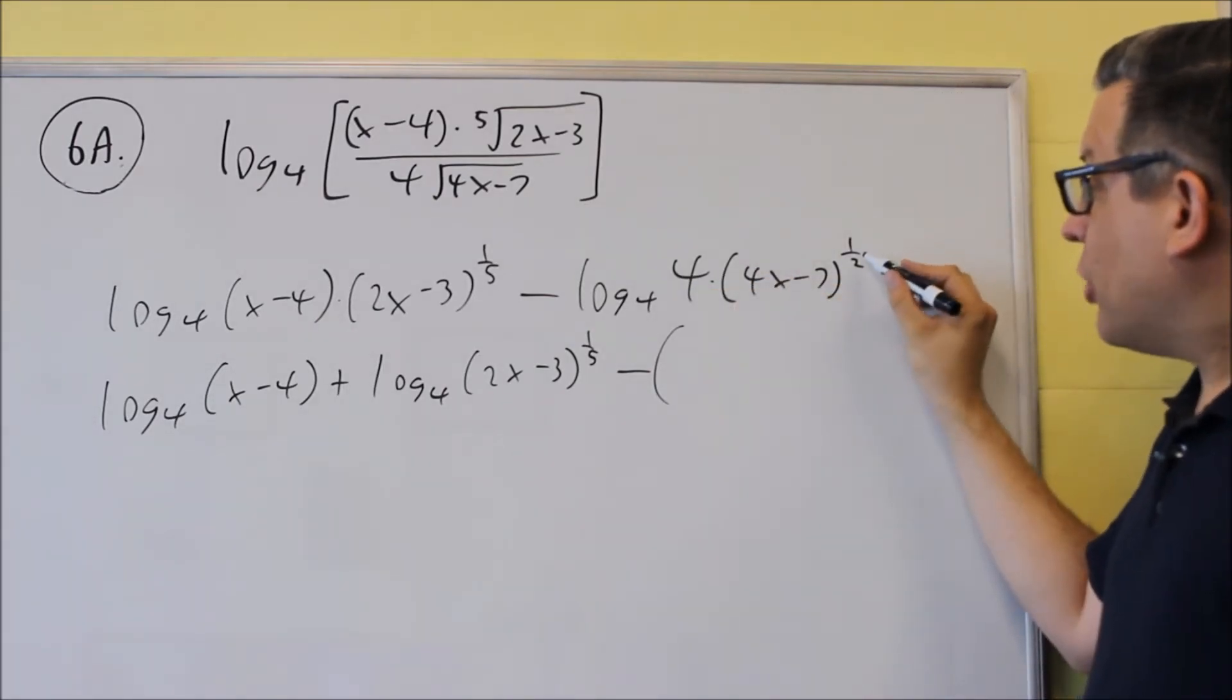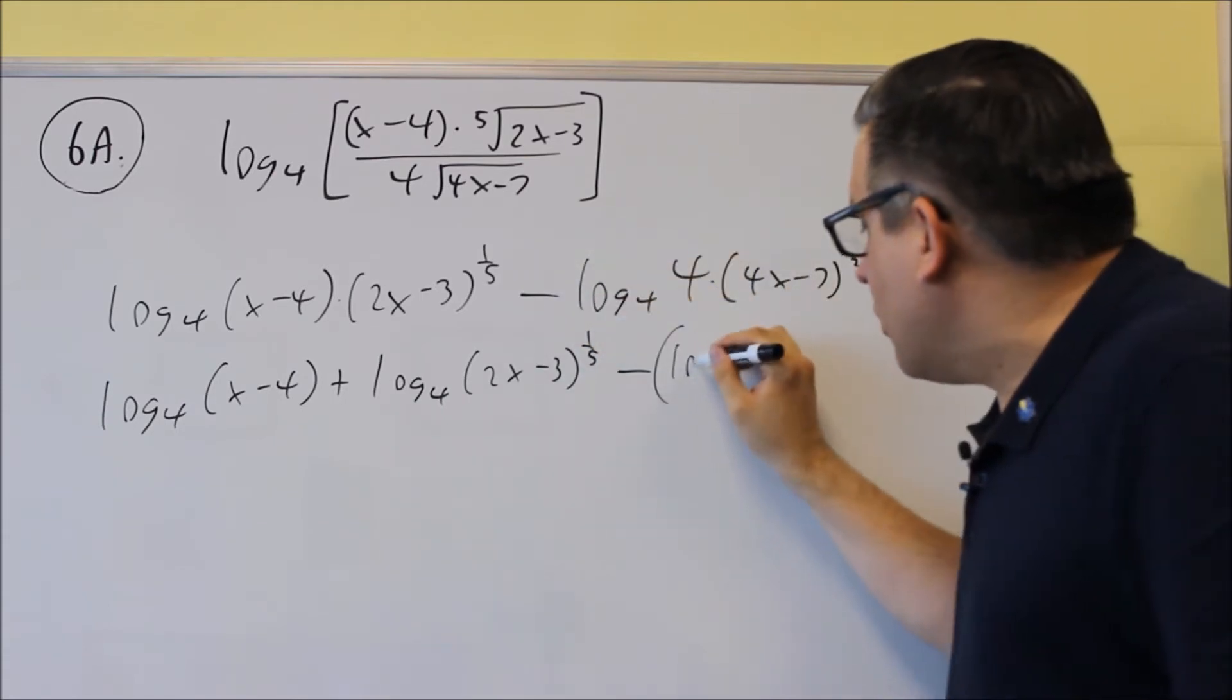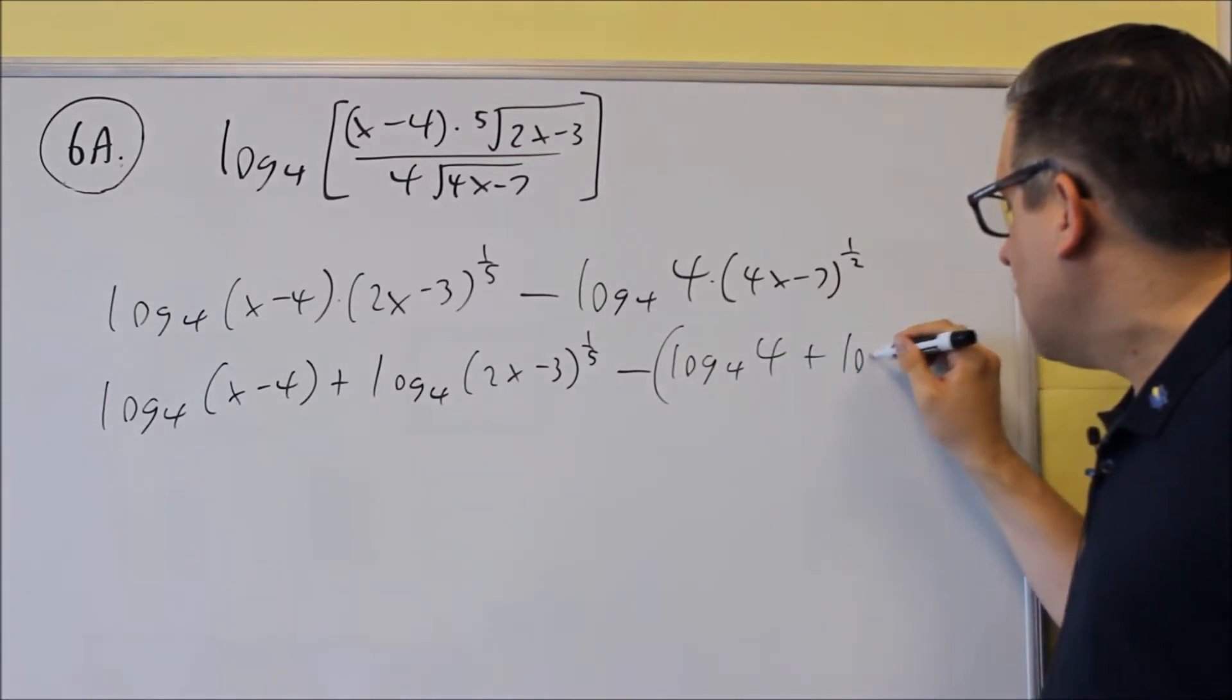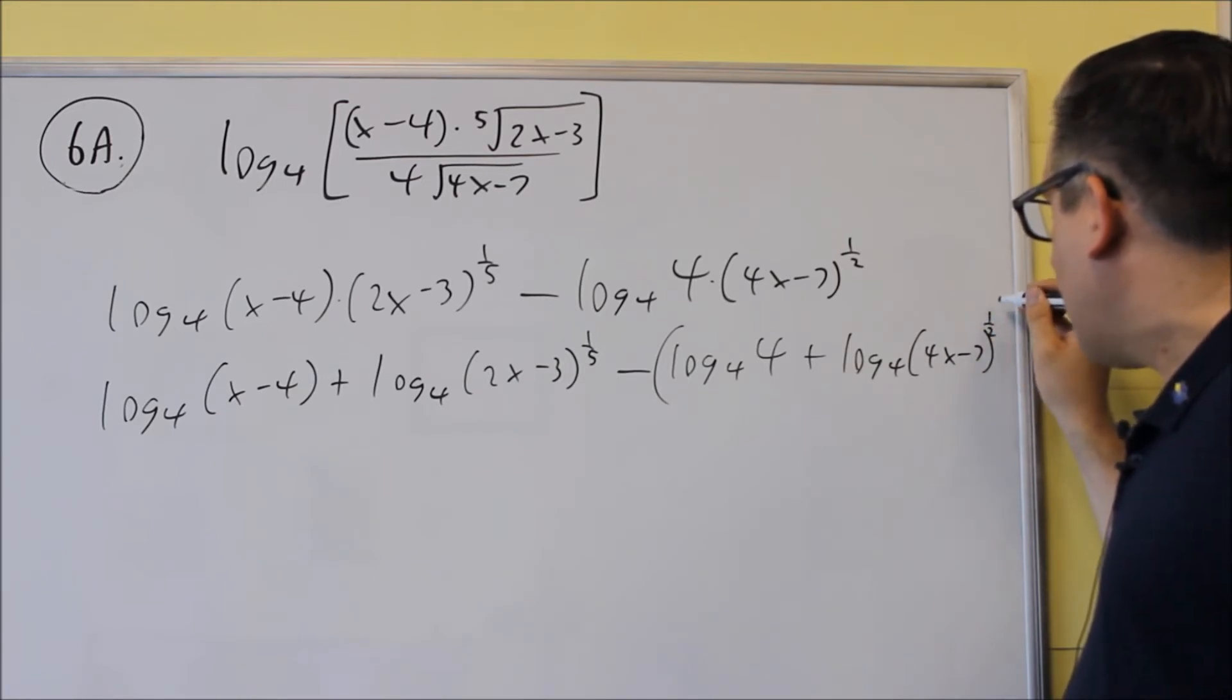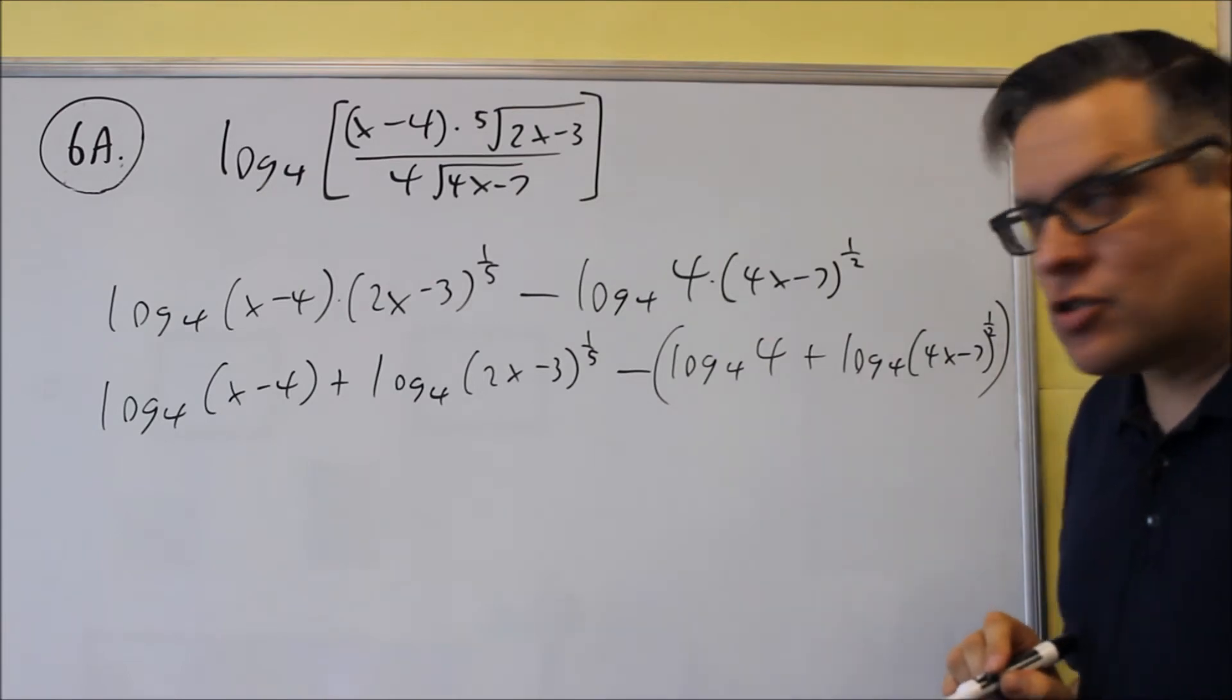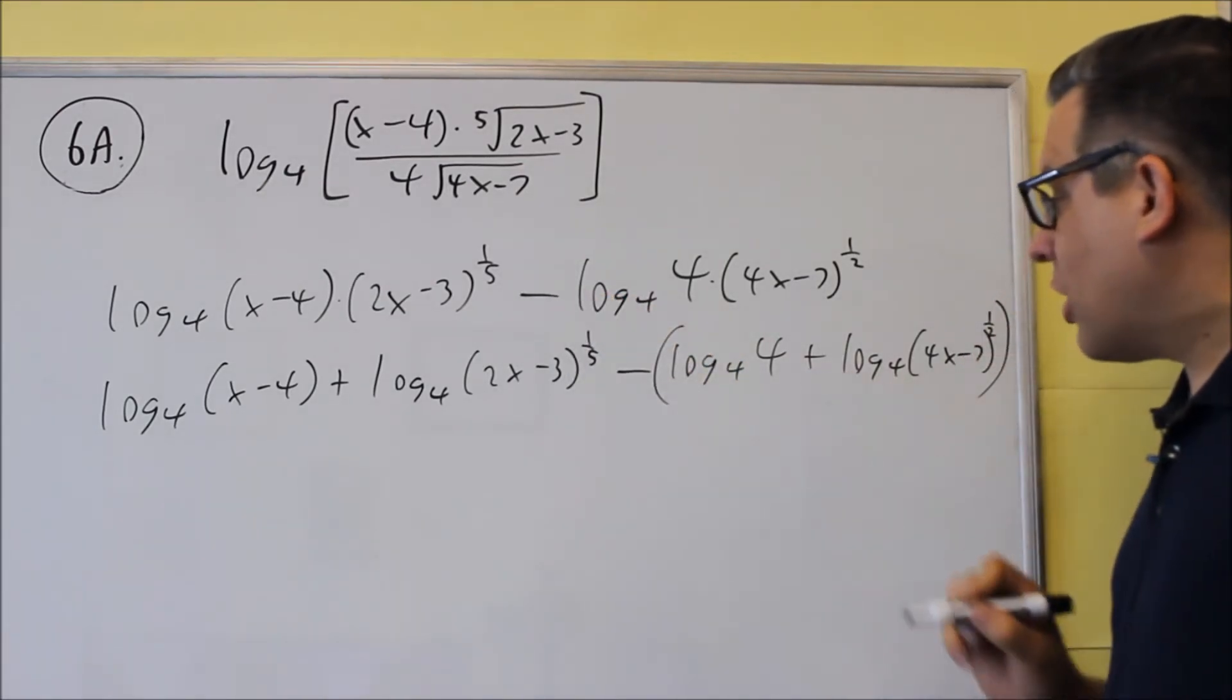You're not allowed to bring the 1 half all the way down and jump over the 4. You have to do it this way. You have to separate it and do log base 4 of 4 plus log base 4 of 4x minus 7. And we're using a plus inside here because that was originally multiplication. Now we still have a minus out front so that takes care of that but inside we're going to have a plus.